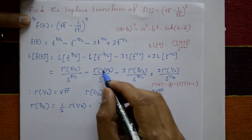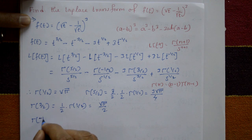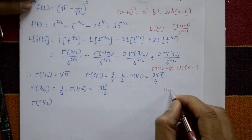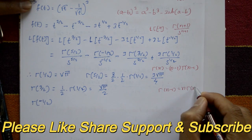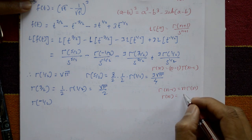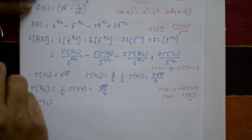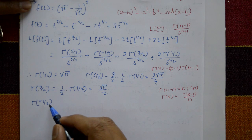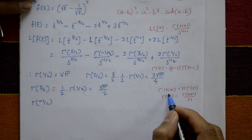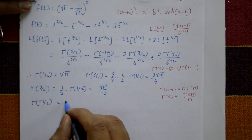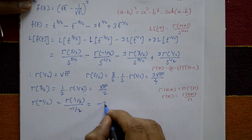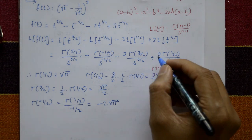For Γ(-1/2): since the argument is negative, we use the relation Γ(n) = Γ(n+1)/n. So Γ(-1/2) = Γ(-1/2 + 1) / (-1/2) = Γ(1/2) / (-1/2) = -2√π.